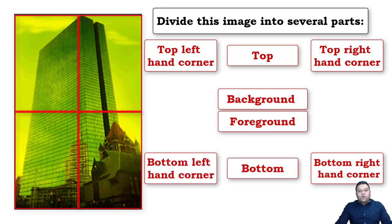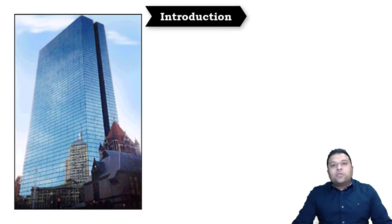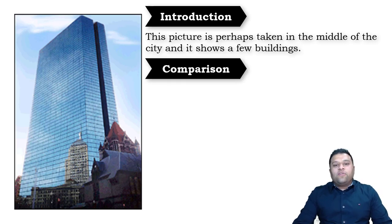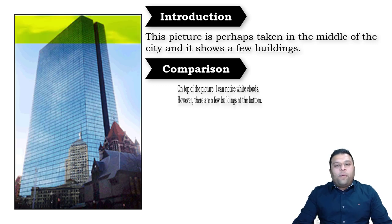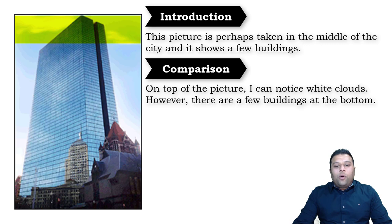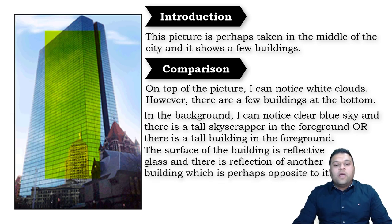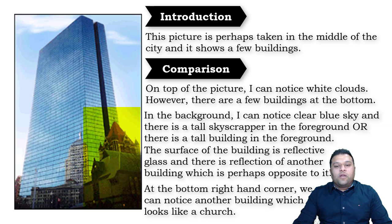Always start your response with an introduction. Since it's a picture, I can simply say: 'This picture is perhaps taken in the middle of a city and it shows a few buildings.' Then I use some comparison. I can say: 'On top of the picture I can notice white clouds; however, there are a few buildings at the bottom. In the background I can notice clear blue sky, and there is a tall skyscraper in the foreground. The surface of the building is reflective glass.'